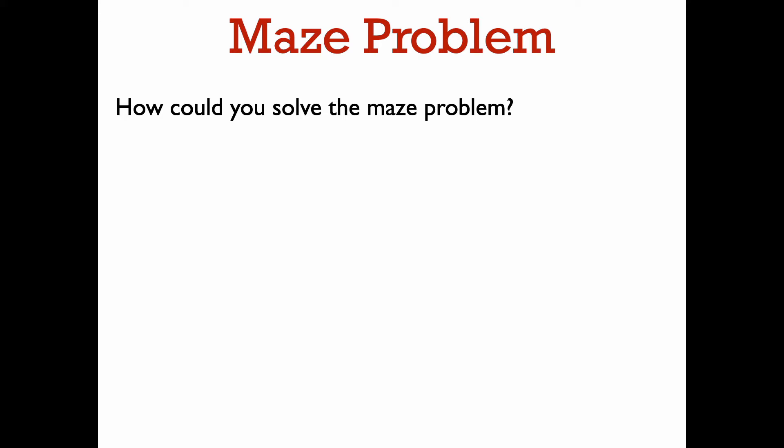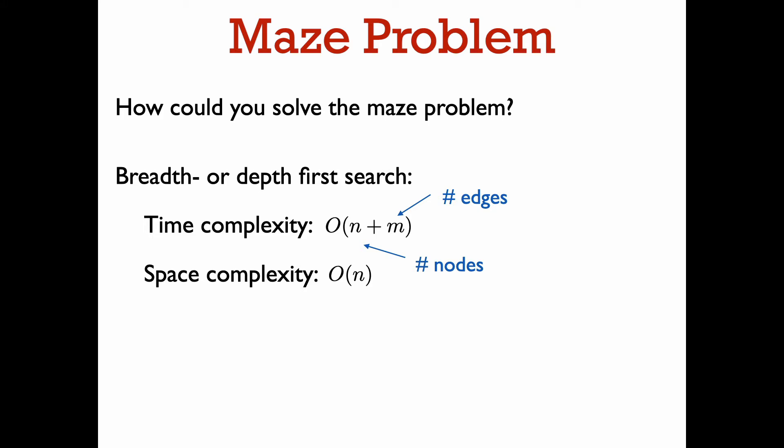So how can you solve the maze problem? How can you determine if there is a path between two vertices of a graph, and find such a path if there is one? There are two classic algorithms to do this: breadth-first search and depth-first search. Both can be done in time order n plus m, where the graph has n vertices and m edges. And both have space complexity order of n.